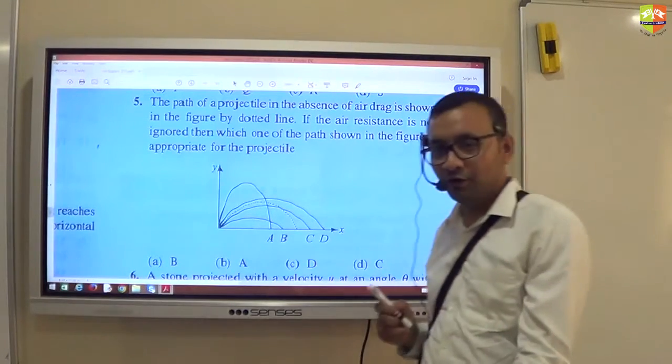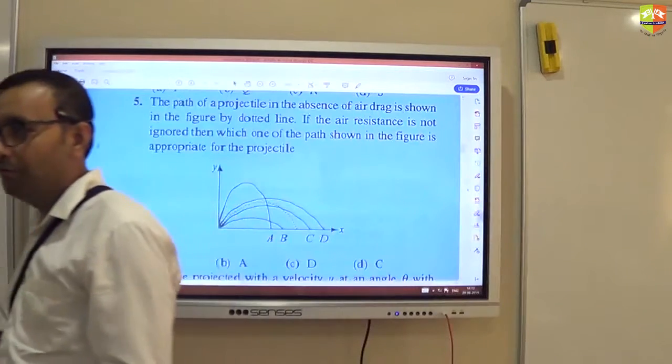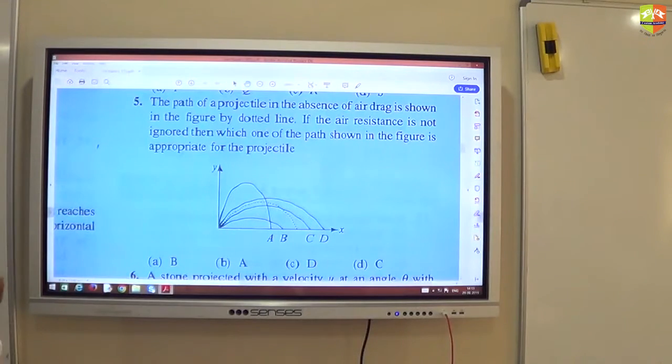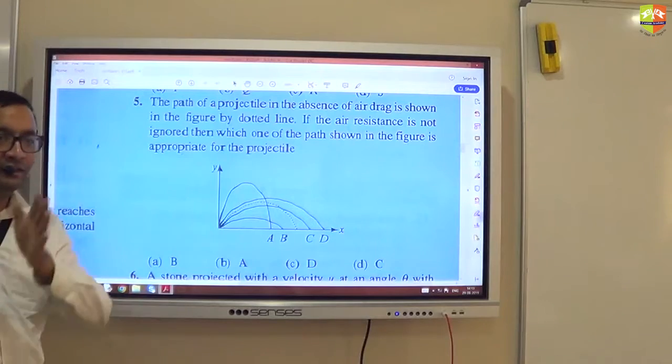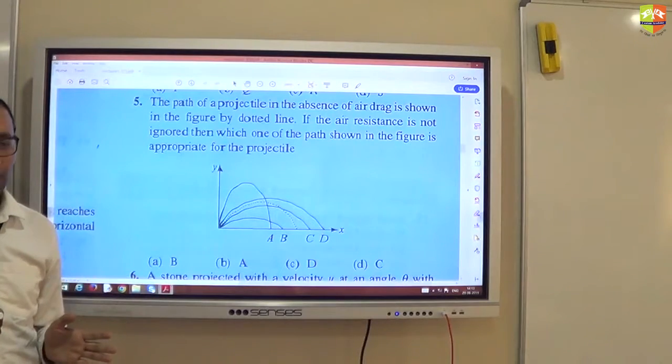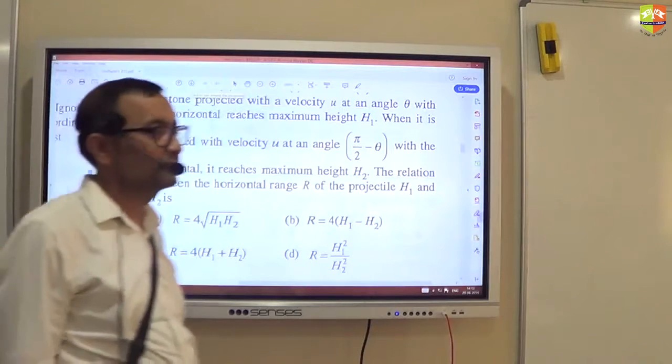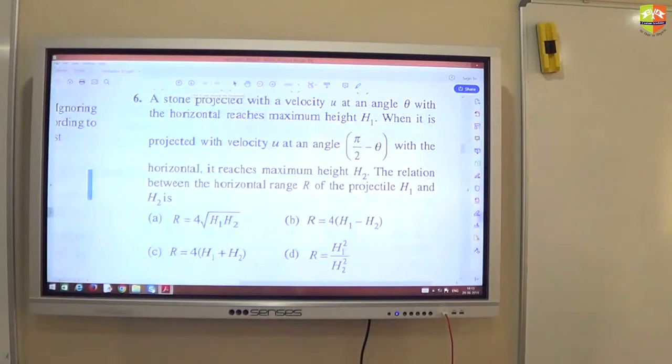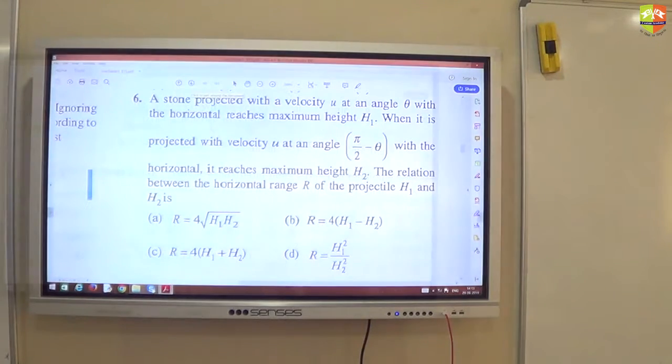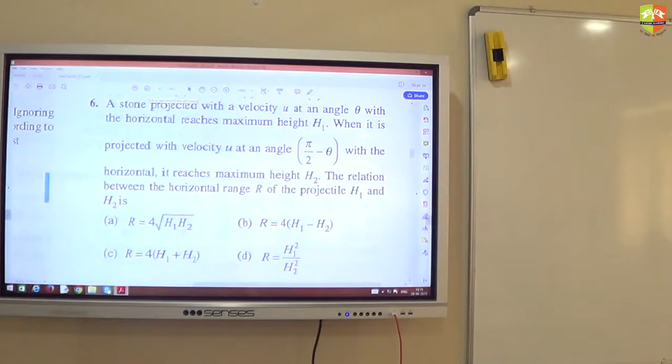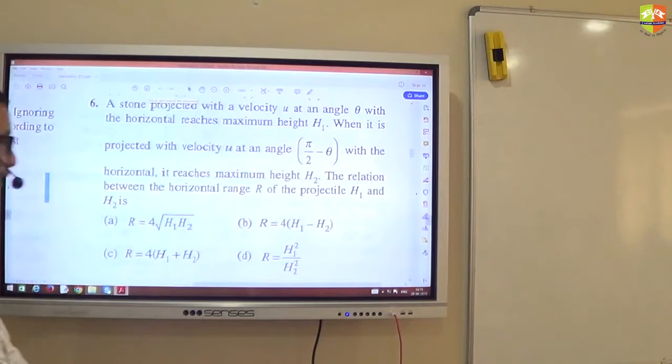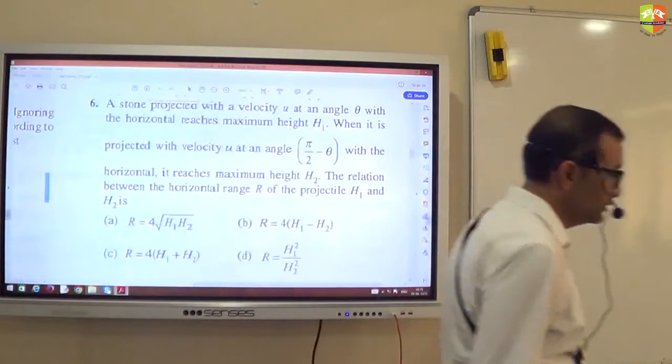Now look at the options - which is only B. So like that you have to solve questions. First you think what will happen because of the condition given in that question, then look at the options. Alright, sixth one. Quietly solve it in two minutes.